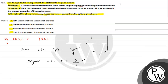For statement two: if the monochromatic source is replaced by another monochromatic source of larger wavelength, we can see that angular width is proportional to lambda. So if lambda increases, angular separation will also increase — not decrease. The statement says it decreases, which is false. So statement one is true and statement two is false, making option B the correct answer.